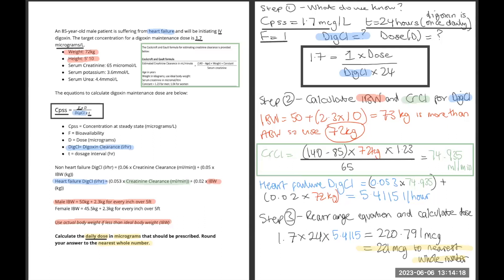Now for step 2, I've noted that 73 kilograms is more than 72 kilograms. That's important because we need to use 72 kilograms for the equation. So our weight is 72 kilograms.